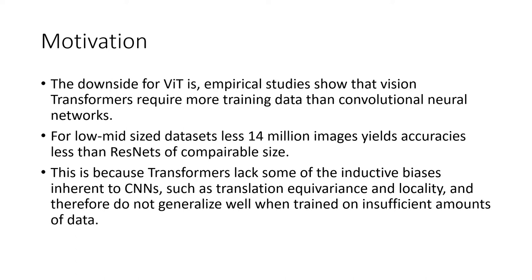improvements on CNNs were only seen when trained on datasets of 14 million to 300 million images. This is because transformers lack some of the inductive biases of CNNs, such as translation equivalence and locality, and therefore do not generalize well when trained on insufficient amounts of data.